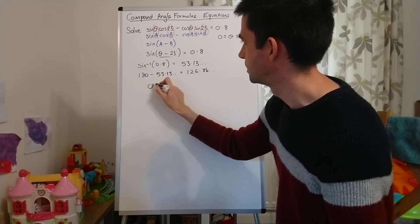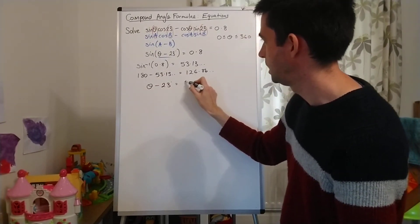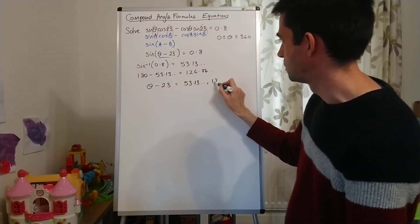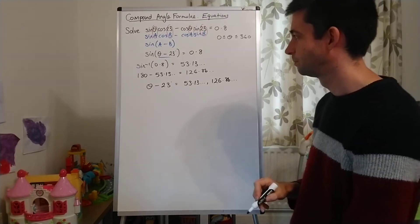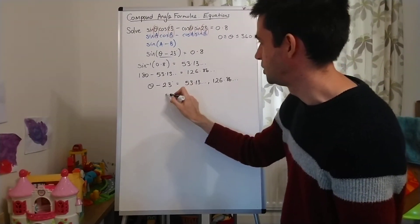So I just need to take the time to write that theta minus 23 degrees is 53.13 and 126.86. And by adding 23 to both sides of my equation,